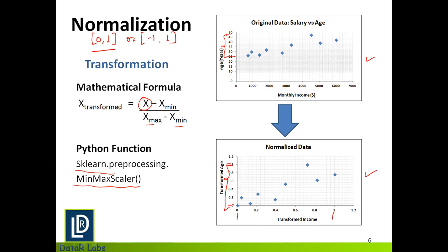Now normalization doesn't actually need any particular distribution to be implemented. And thereby, it can be used in non-parametric algorithms like KNN, K nearest neighbor.